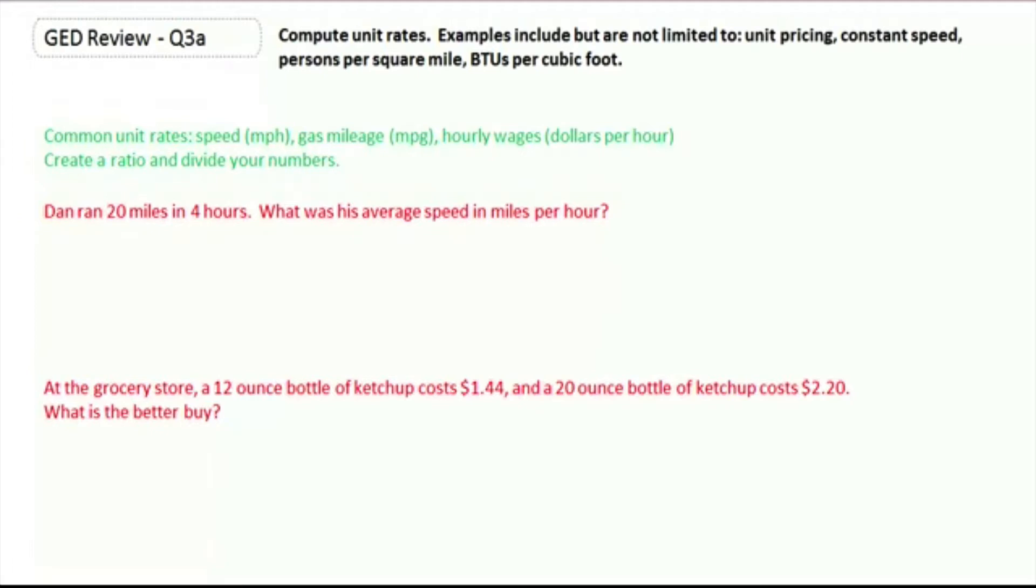We're going to create a ratio and divide the numbers. Our example says that Dan ran 20 miles in 4 hours. What was his average speed in miles per hour? We're going to set it up as a ratio, and in this case, because there's two different units, it's actually considered a rate.